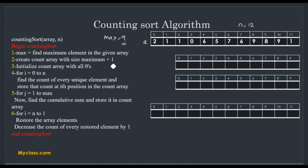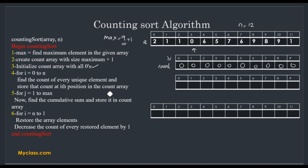The second step is to create a count array with size max + 1. Since the max value is 9, we create a count array with 9 + 1 = 10 elements. This is the count array we use for counting sort. The third step is to initialize all values of the count array as 0. The fourth step: for i equal to 0 to n, find the count of every unique element and store that count at the i-th position in the count array. If 2 is there, we update the count at index 2.